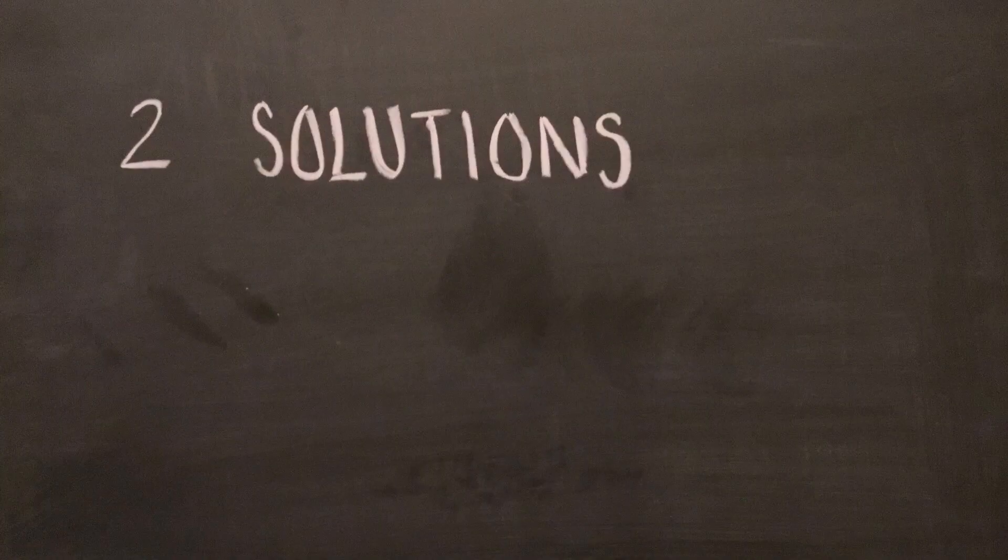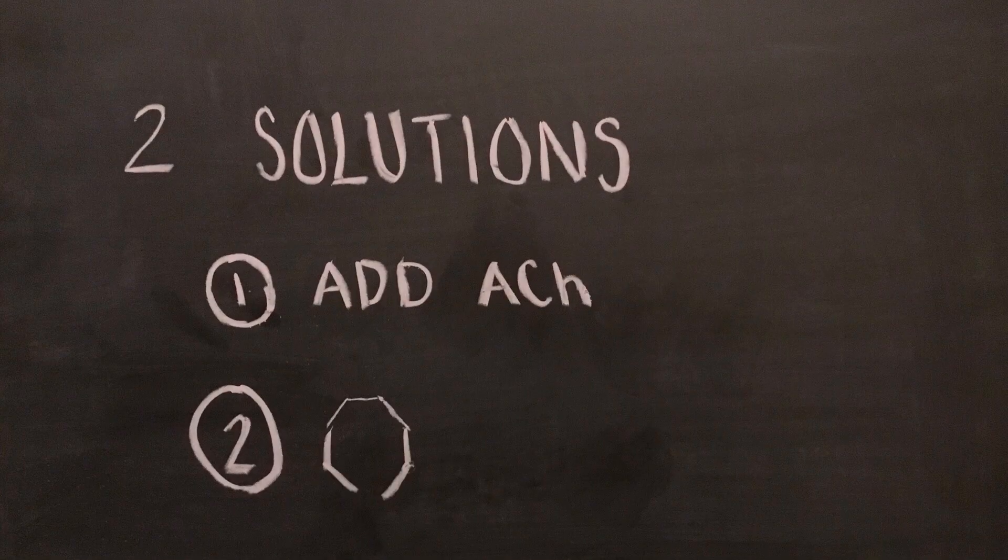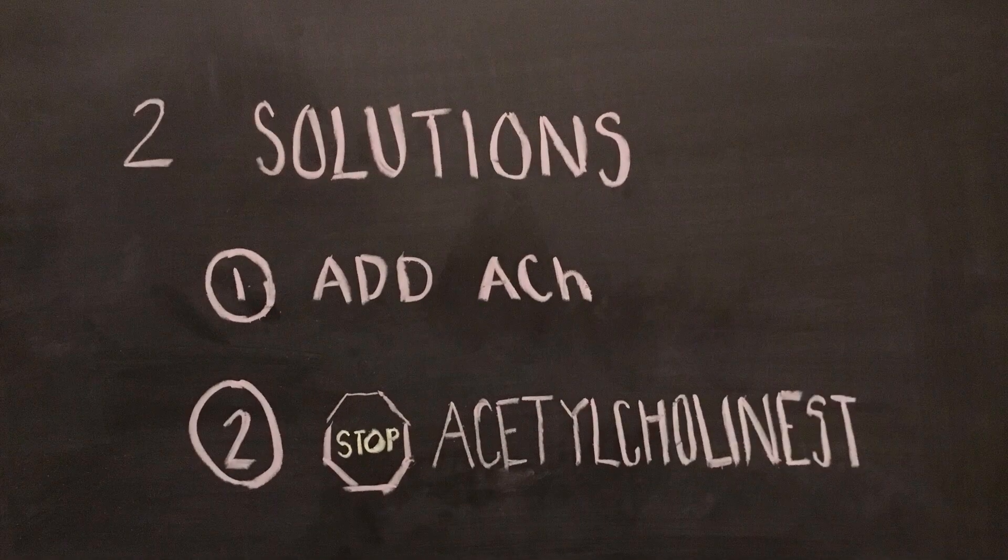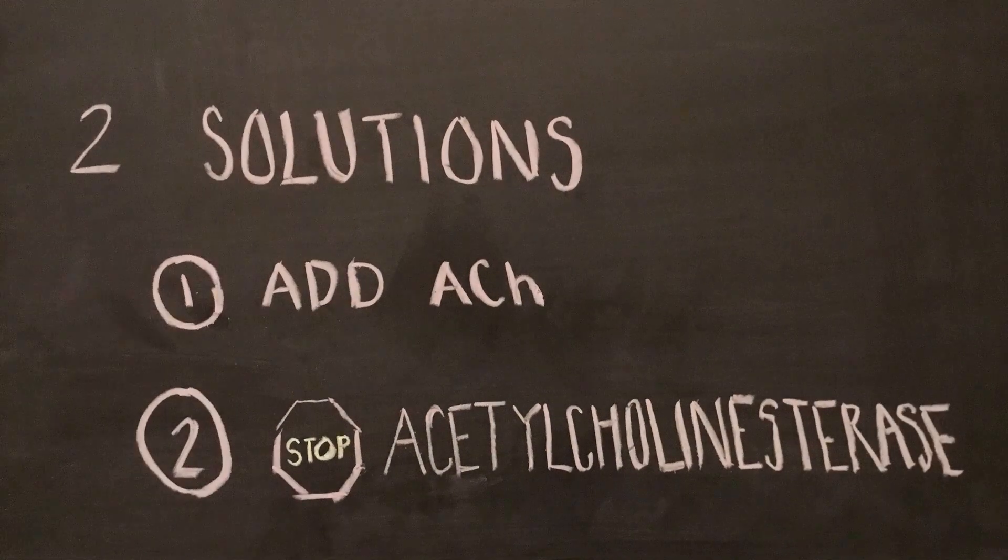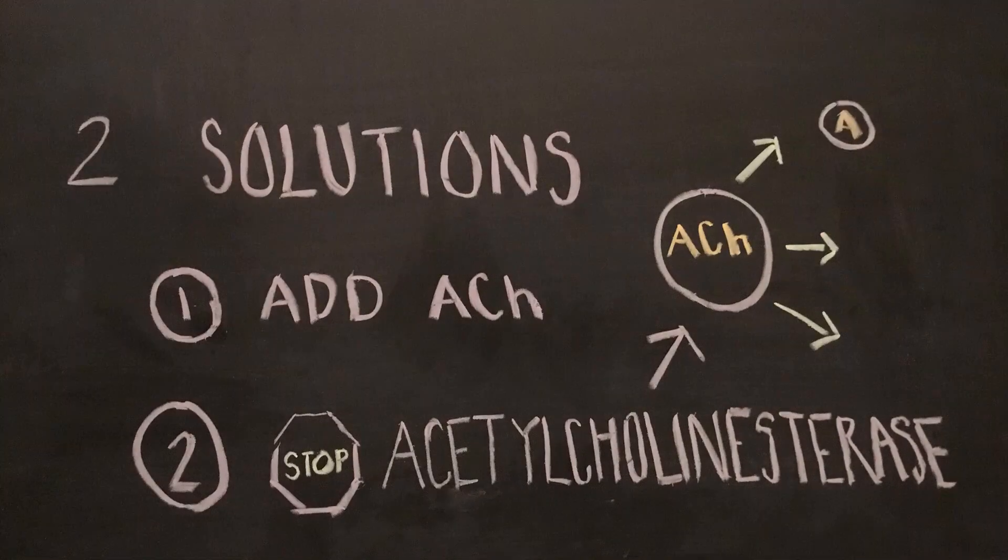The first includes introducing more acetylcholine to the body through medication. The second is to stop acetylcholine esterase. This is an enzyme that breaks down acetylcholine, typically when the body makes too much.